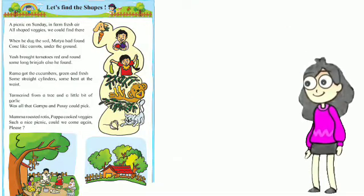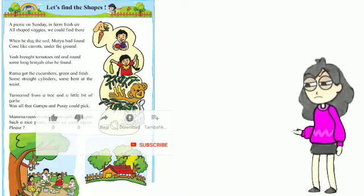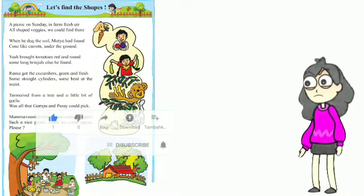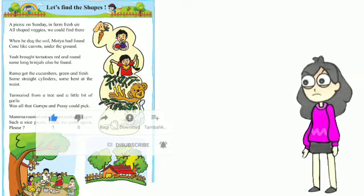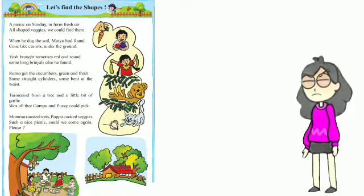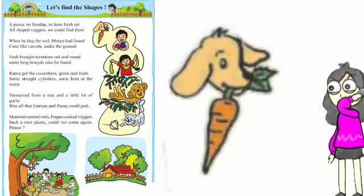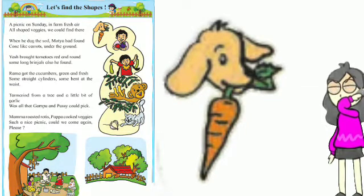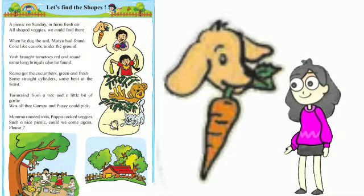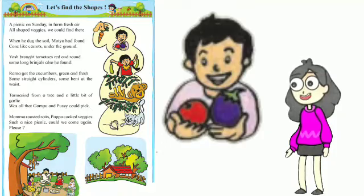Let's learn the poem 'A Picnic on Sunday.' A picnic on Sunday, in farm fresh air, all shaped veggies we could find there. When he dug the soil, Motha had found corn-like carrots under the ground. He brought tomatoes red and round.